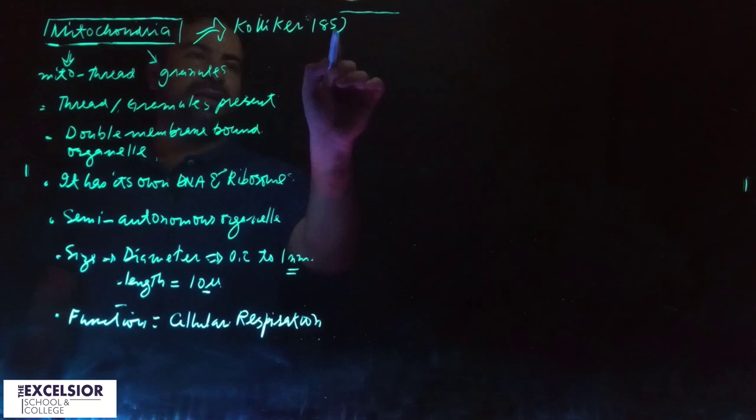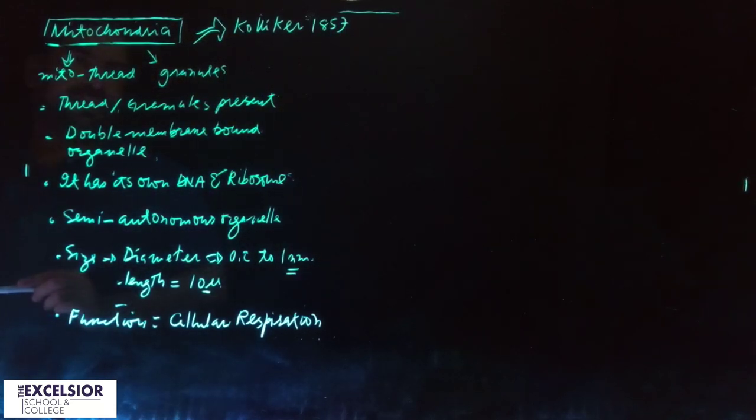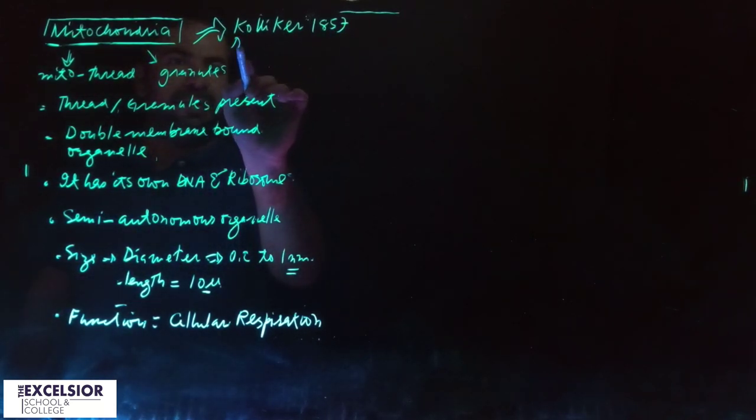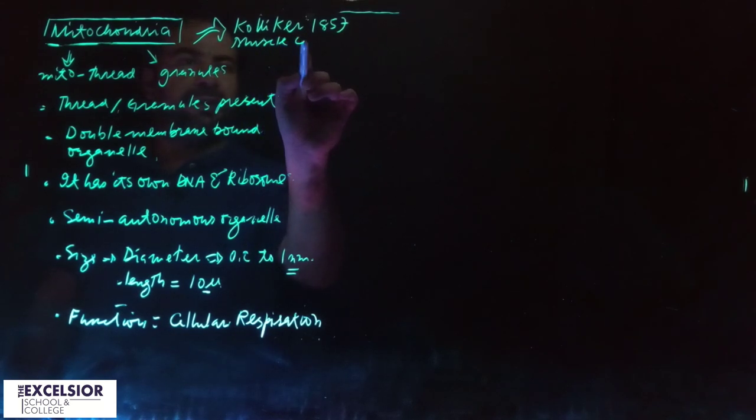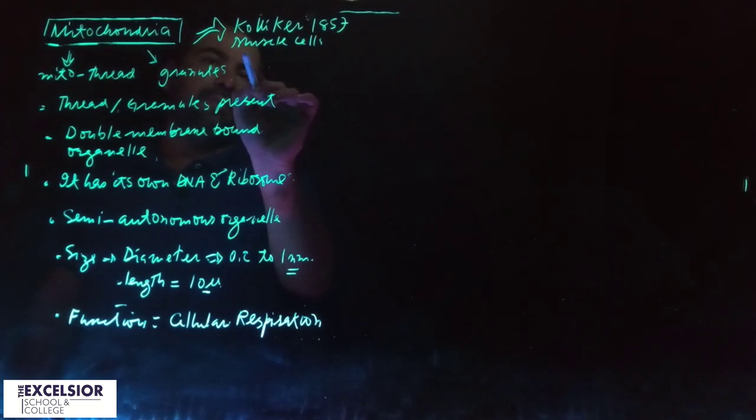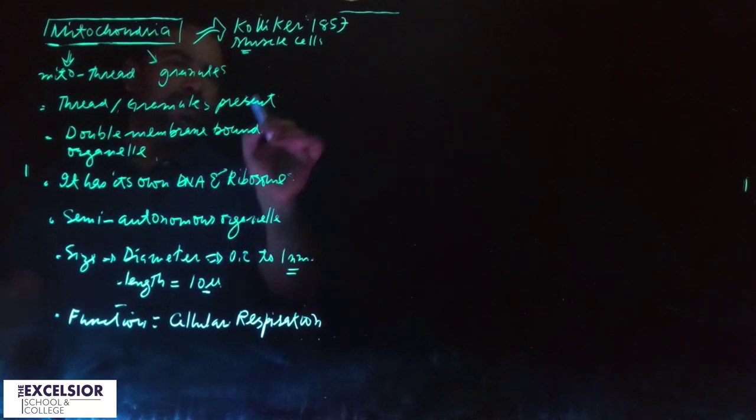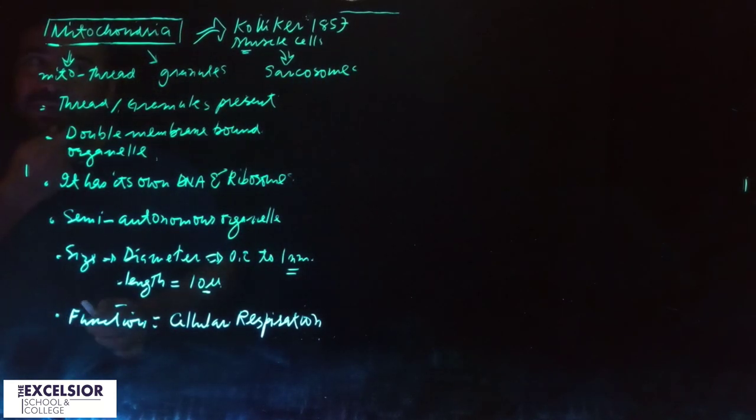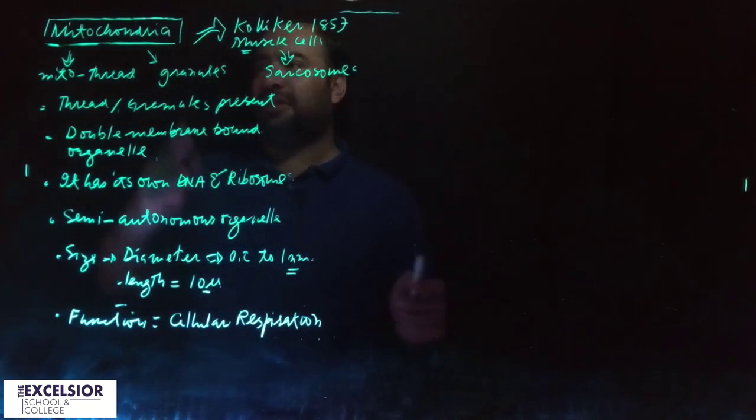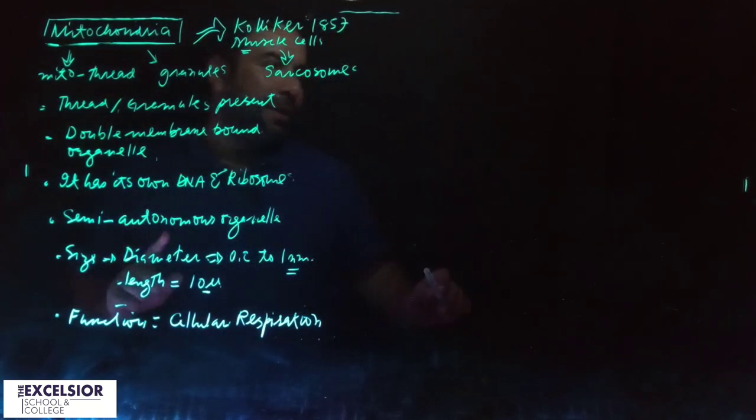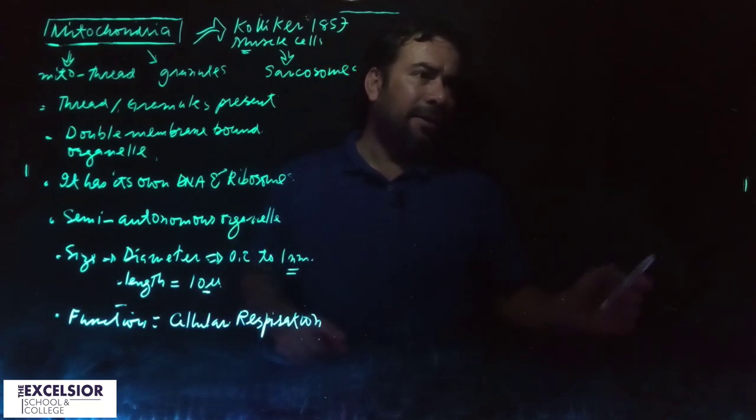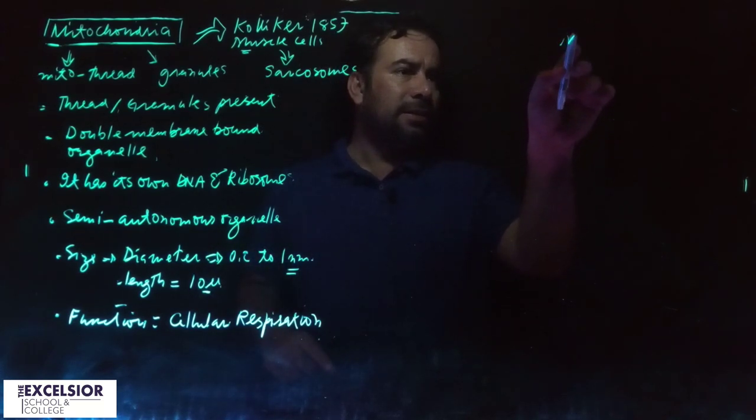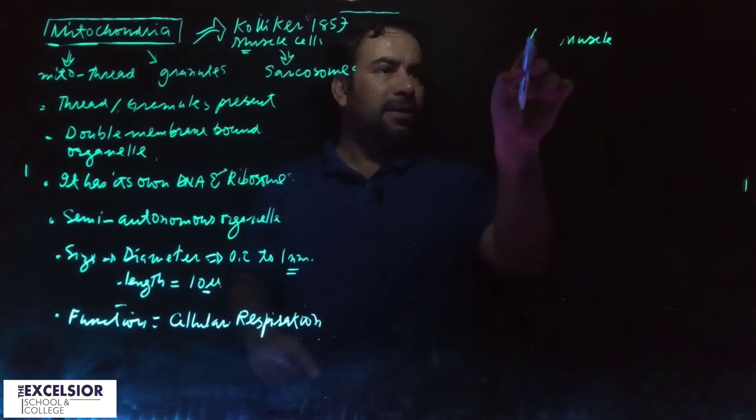He discovered them in the muscle cells. Since you call muscle sarco, what he named was sarcosomes. That was truly fine because in the muscle cell the number of mitochondria is really really big.